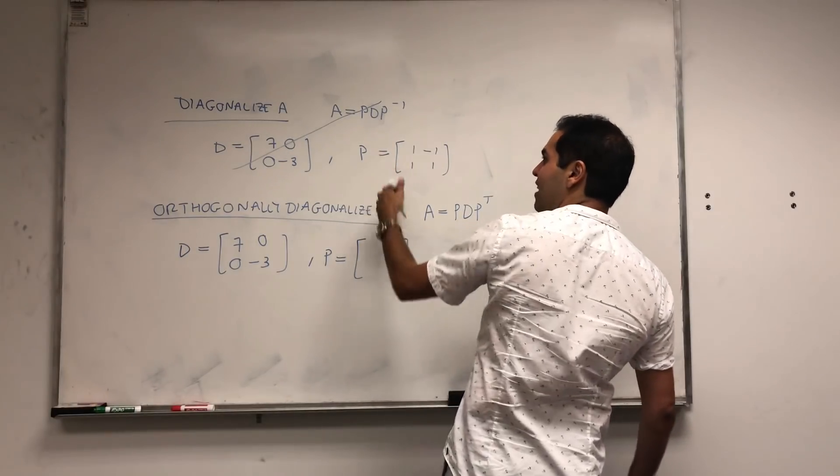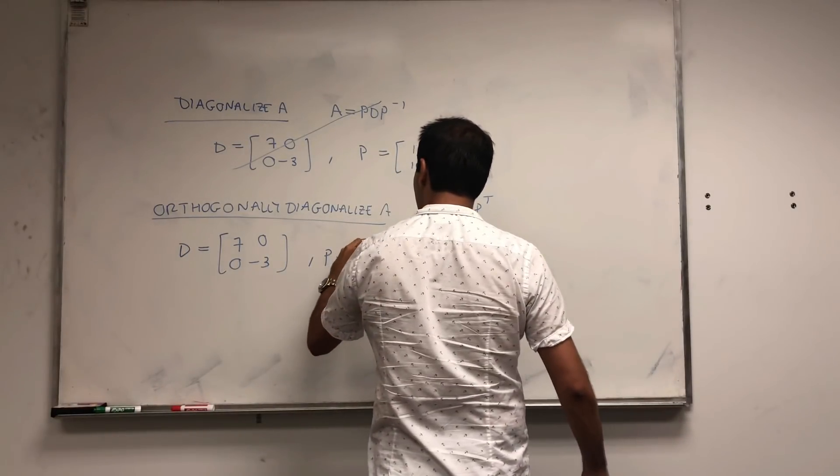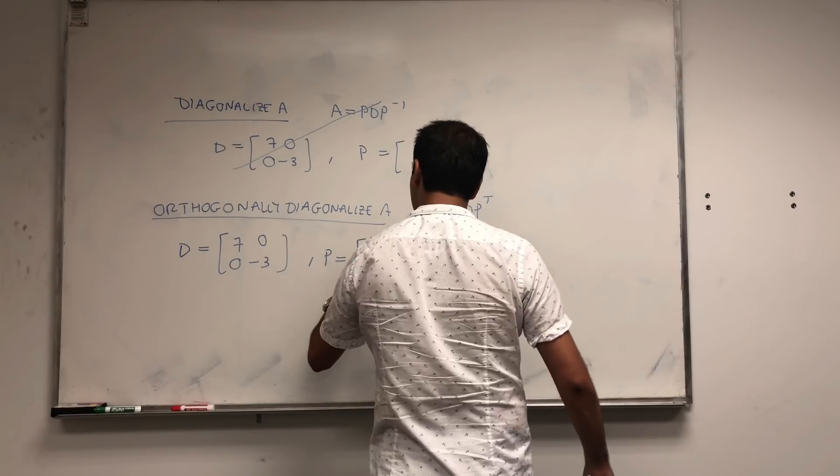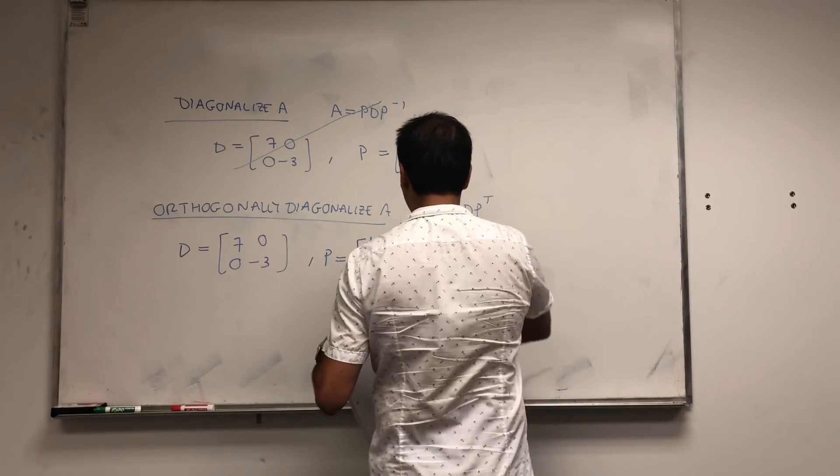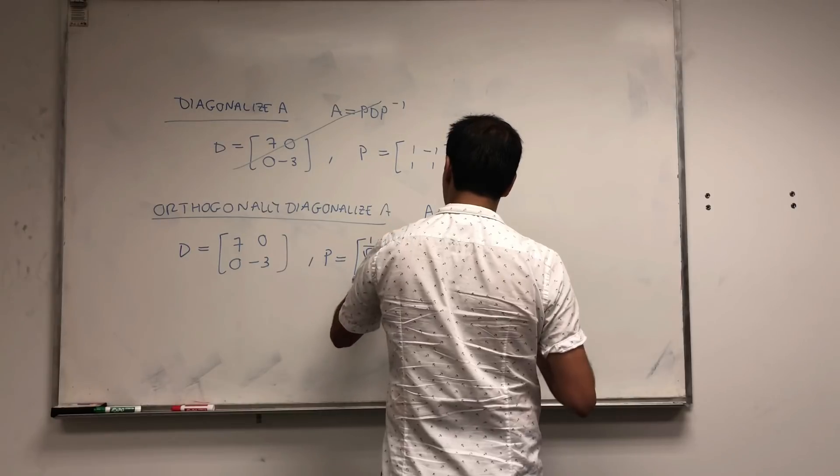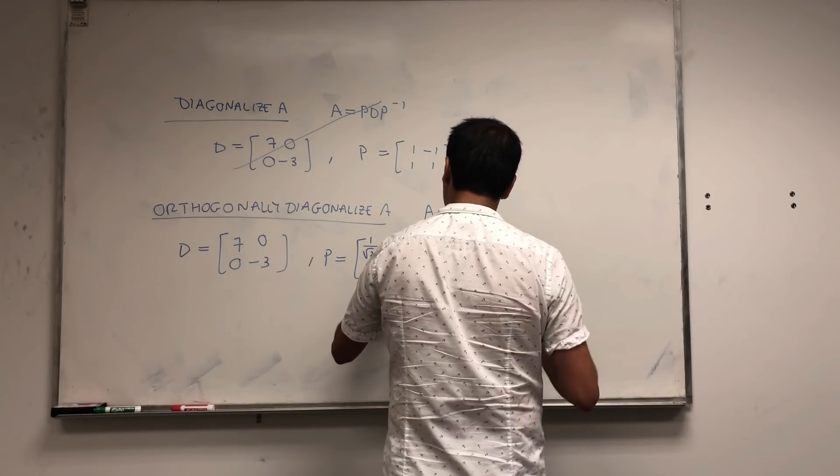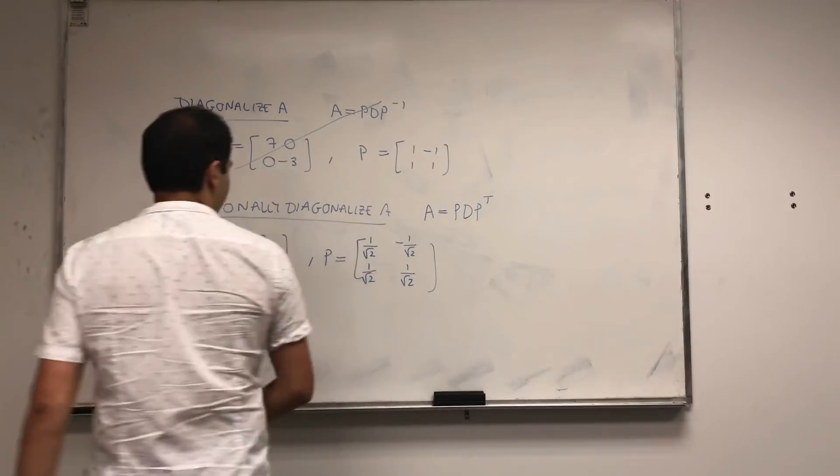Which here is easy because we have just two little eigenspaces here. And all you do is just divide each vector by its length. So in fact, P becomes 1 over the square root of 2, 1 over the square root of 2, minus 1 over the square root of 2, and 1 over the square root of 2.